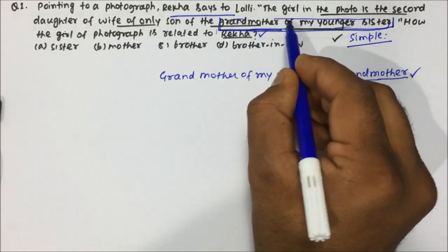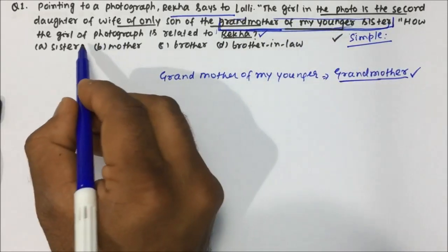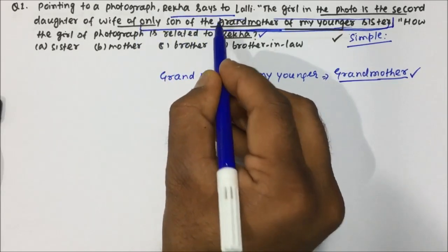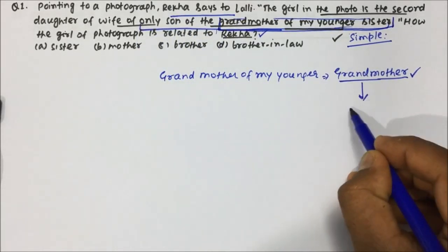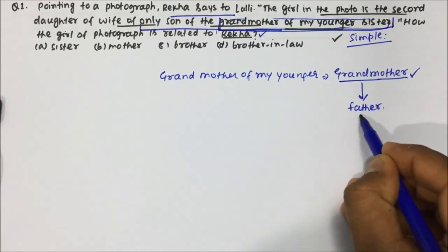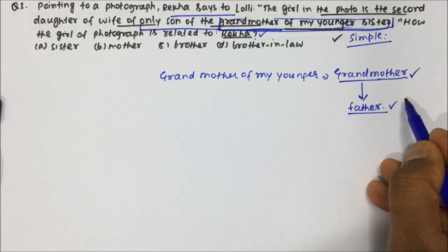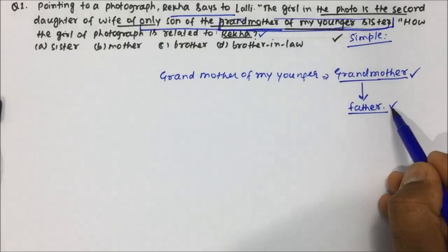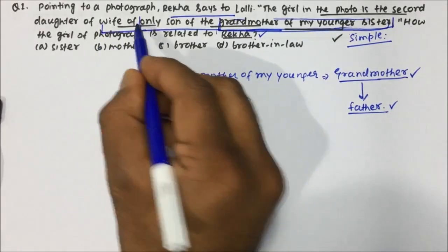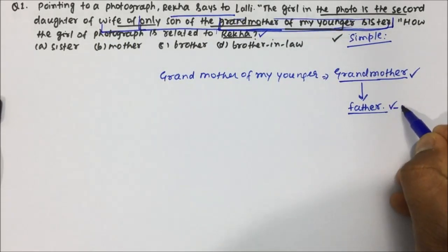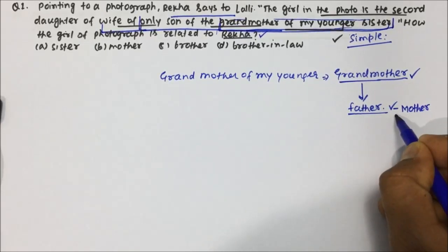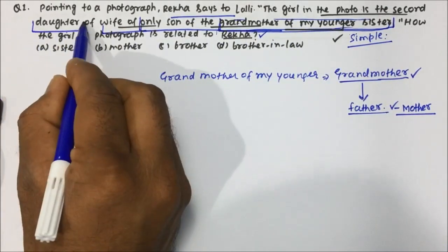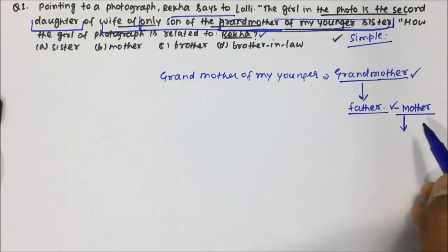So, step by step: the girl in the photo is the second daughter of the wife of the only son of grandmother. Only son of grandmother — if my grandmother has only one son, then he will be my father. So only son of grandmother means my father. Wife of father will be mother.